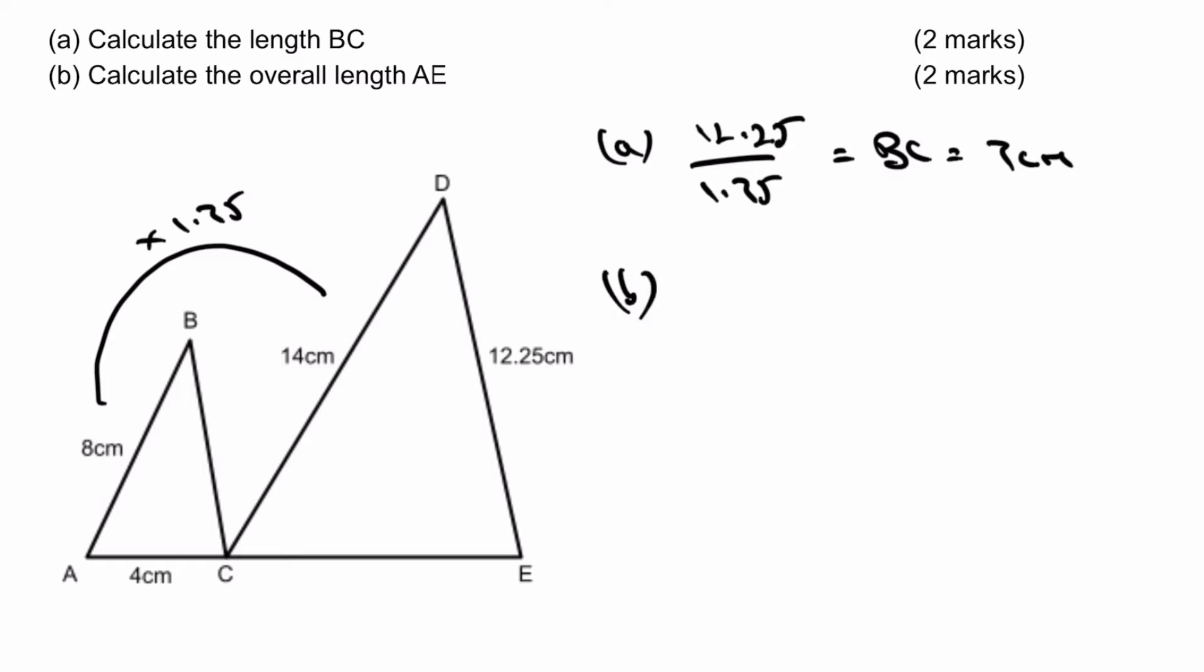Part B of this particular question, I've got CE, which is going to be this piece along the bottom here, is going to be equal to AC times 1.75. That's going to give me a value of 7. However, the question itself is asking for the overall AE, so I've got to add the original AC plus CE, and that's going to give me 4 plus 7, which equals 11 centimetres.